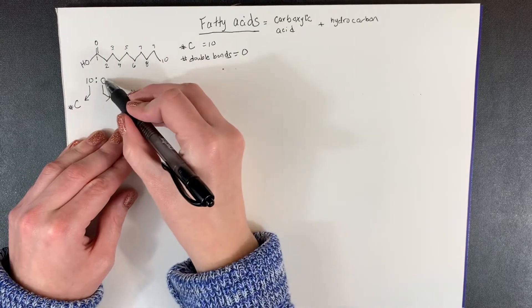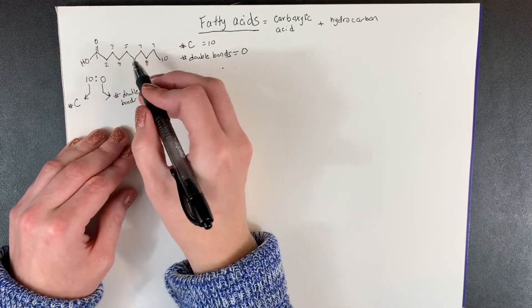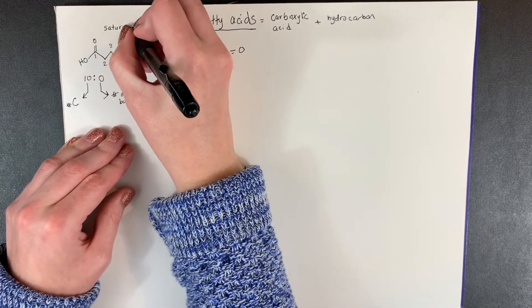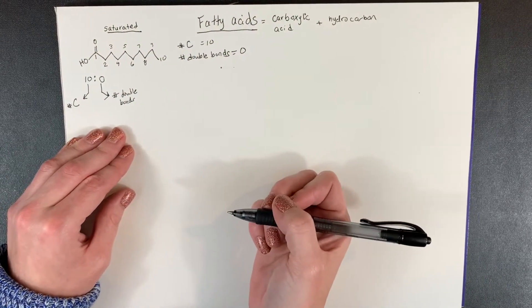Now when this number is zero and there's no double bonds, we call this type of fatty acid saturated. So this is an example of a saturated fatty acid. There are no double bonds in it.